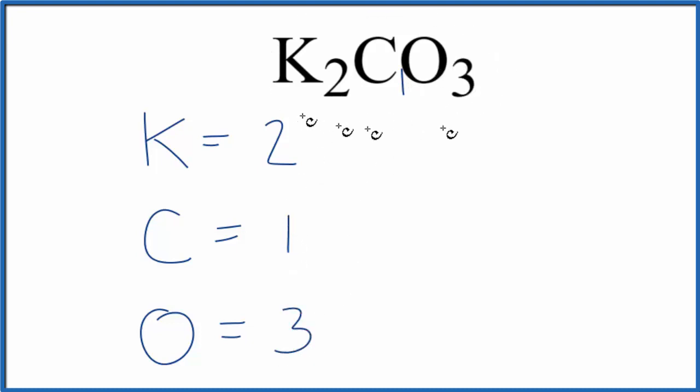If you want to know the total atoms in K2CO3, you just add these up. Three plus one is four, plus two, six total atoms in K2CO3.